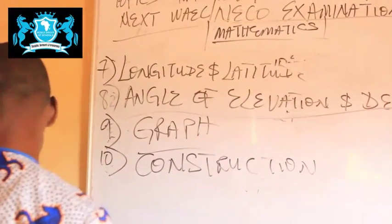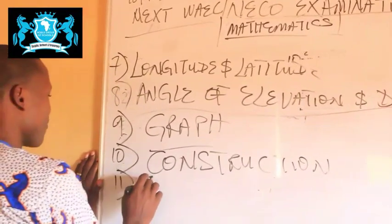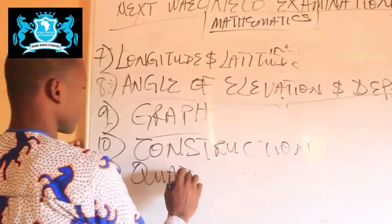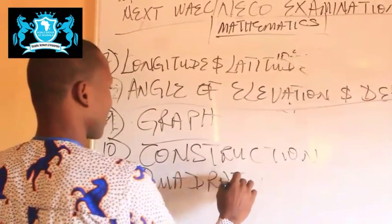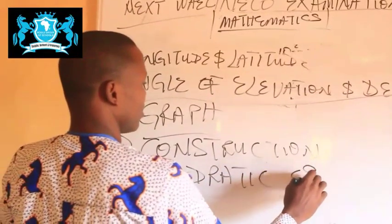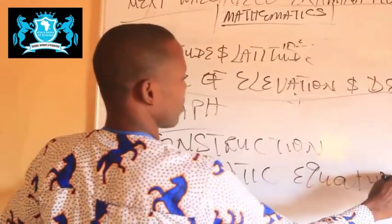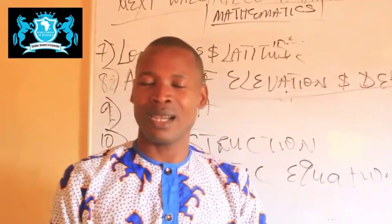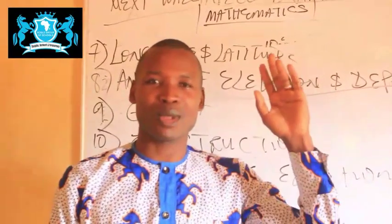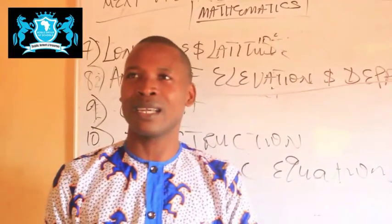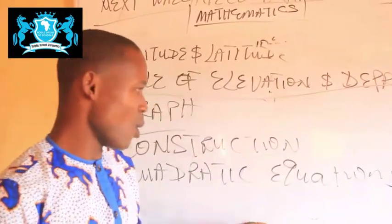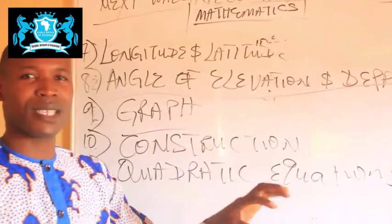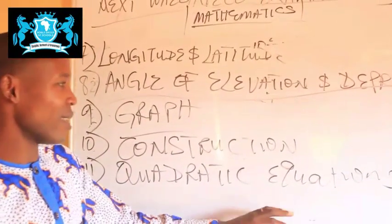Then we have number 11: Quadratic Equations. Of course, you already know the methods of solving quadratic equations. We have the elimination method, graphical method, and substitution method. We will look at them — there are topics on our YouTube channel that cover these methods.